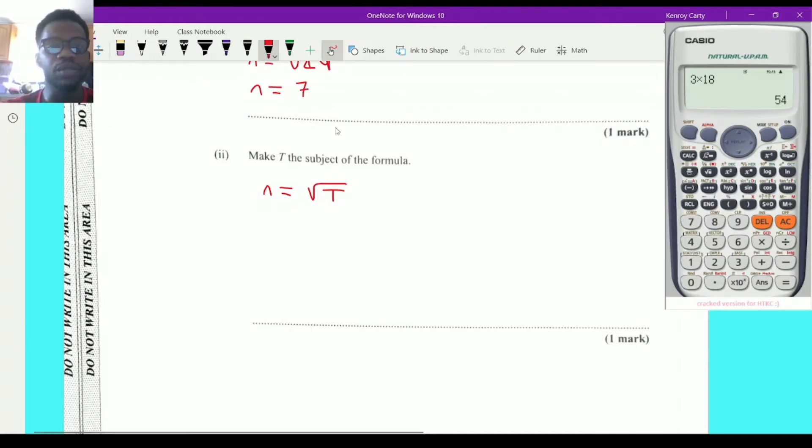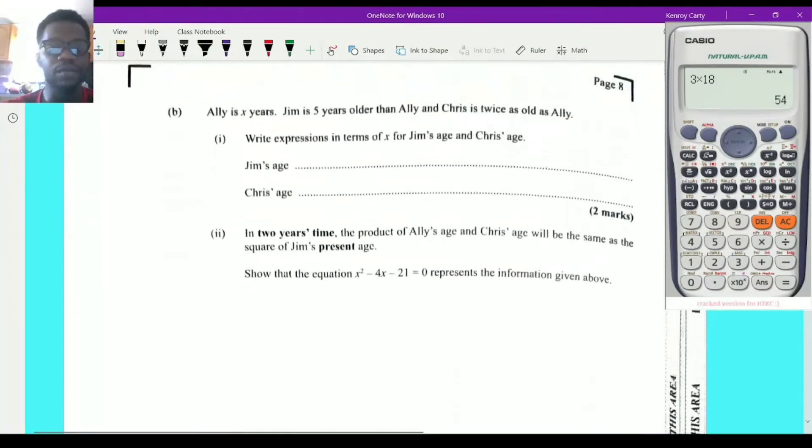Now, this is the square root. Normally, in order to reverse a process or to get rid of something, we have to use the opposite operation. And the opposite of square root is square. So I'm going to have n squared equal to the root of t all squared. Now, what does the square do? The square cancels all the square root. So I have n squared is equal to t. So it cancels, therefore t is equal to n squared. Because, as you know, if n squared is equal to t, then t must be equal to n squared. And that is what they required from us right there. And that's an easy one mark.